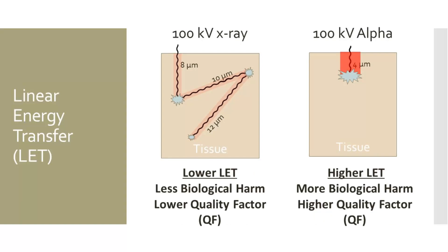Higher linear energy transfer in tissues means that there is more biological harm. Quality factors that are assigned to radiation types are based on the energy's linear energy transfer. Alpha particles have the highest LET and have a quality factor of 20, as compared to X-rays and gamma rays that have a much lower LET and a quality factor of 1. This is because alpha energy is more concentrated, causing increased biological harm in a smaller area. In other words, the probability of a target molecule being involved increases as LET increases.